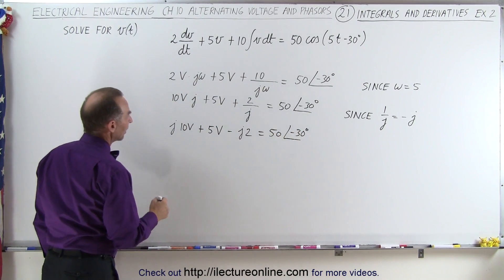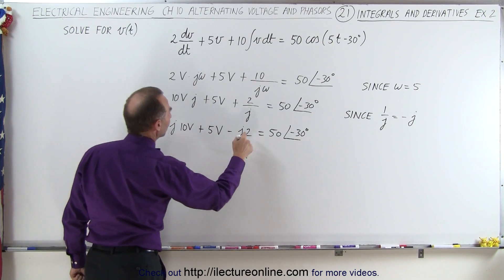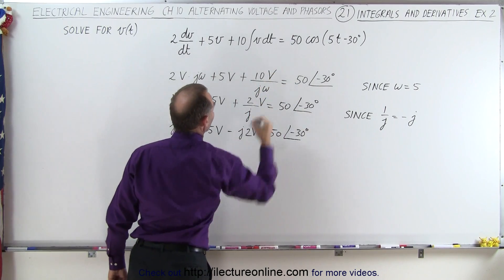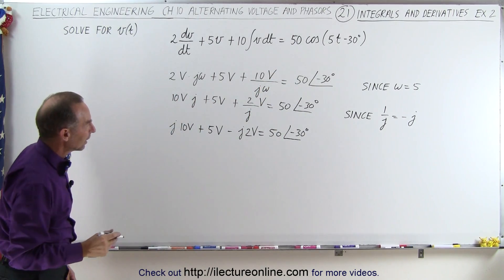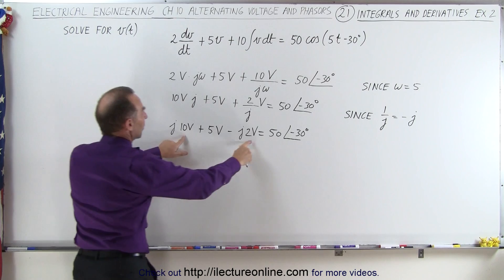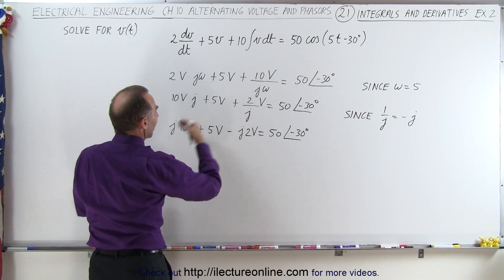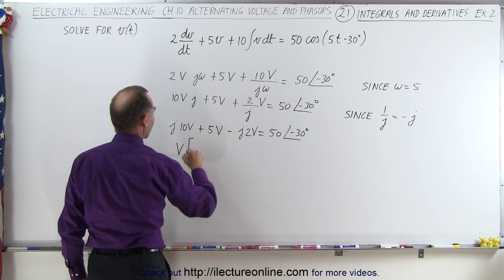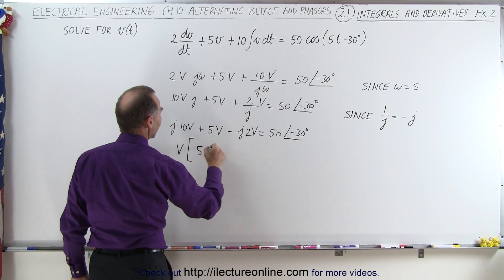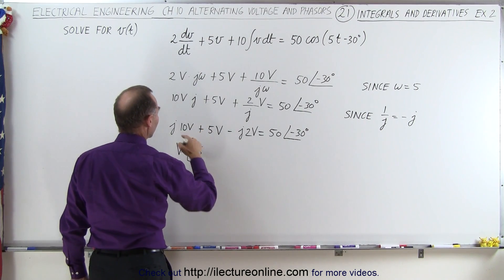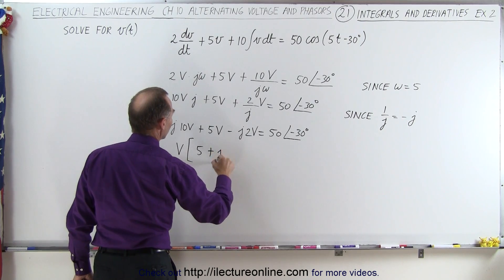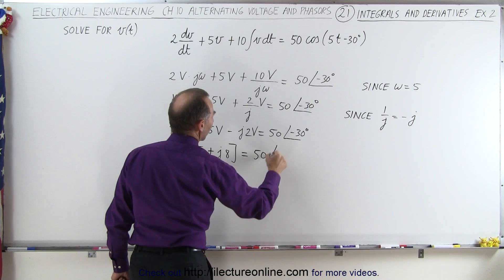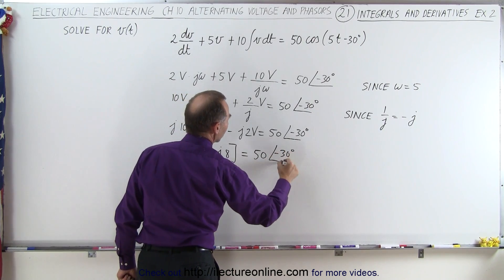So now we realize we have two imaginary parts — and I should note there should be a V on the j·2 term as well. So now I have two imaginary parts and a real part, so I can factor out V and combine the imaginary parts. That gives us V times 5 plus j times 8, which is equal to 50 at a phase angle of minus 30 degrees.